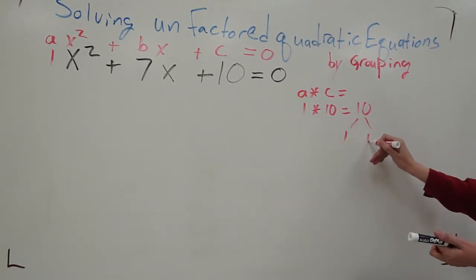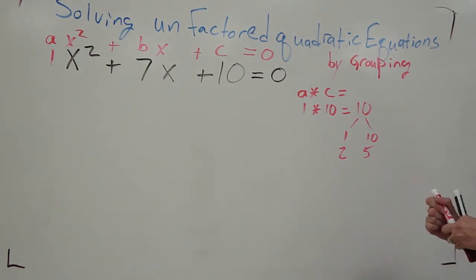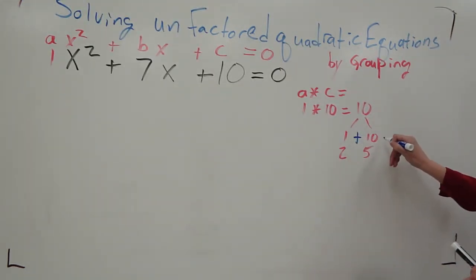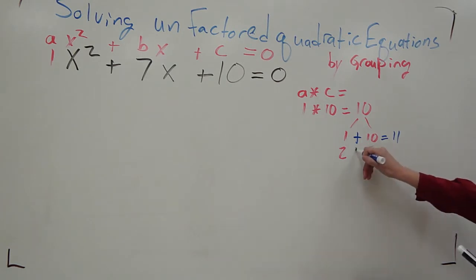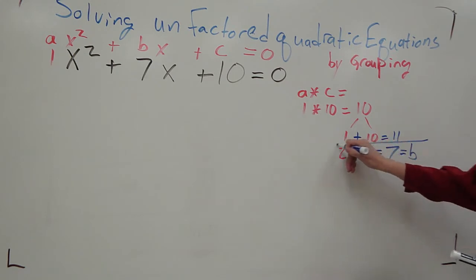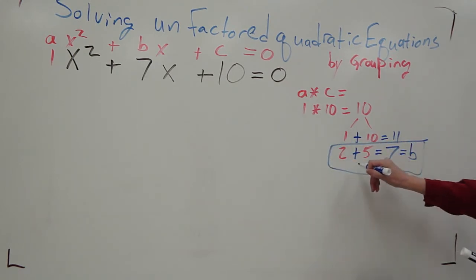10 is either 1 times 10 or 2 times 5. I am now going to add these two numbers together and see which one of them will equal b. So 1 plus 10 equals 11. 2 plus 5 equals 7. This is b, so I am going to replace b with this number.